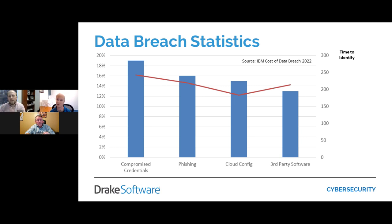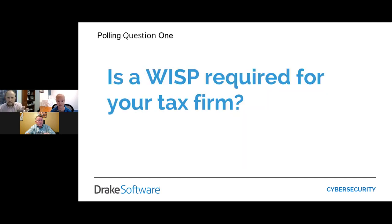Other attack vectors include cloud misconfigurations — if you use cloud storage, ensure it's properly secured — and third-party software. Other companies or tools you have installed need to be kept up to date, as compromised third-party vendors have been seen as attack vectors even at the government level.